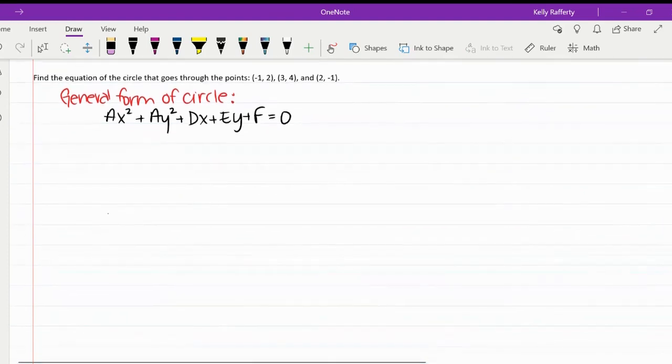All right guys, we're going to do a nice application of our matrices here. This is included in 6.3, really. Our question is: find the equation of a circle that goes through these points: negative 1, 2, 3, 4, 2, negative 1. Now unfortunately, none of these are endpoints of a diameter. There's no X and Y that are the same. So we're going to need to do a little solving for a system.